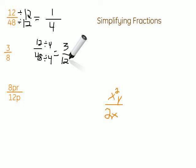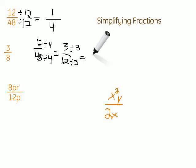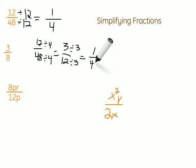Now we need to look: is there any number we can divide 3 and 12 by? Sure — 3. So now we divide by 3 on the top and the bottom. That gives us 3 divided by 3 is 1, and 12 divided by 3 is 4. Notice our answers are the same — we get 1 fourth. This takes an extra step, but that's okay. Just make sure that you end up getting that fraction into its simplest form, where there's nothing we can divide both top and bottom by.